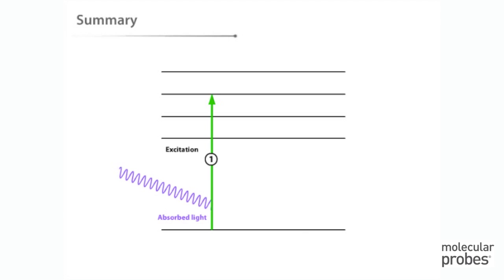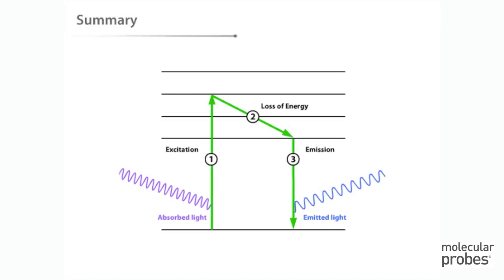One, excitation of a fluorophore through the absorption of light energy. Two, a transient excited lifetime with some loss of energy. And three, return of the fluorophore to its ground state accompanied by the emission of light. The light energy emitted is always of a longer wavelength than the light energy absorbed, due to the energy lost during the transient excited lifetime, as shown in Step 2.